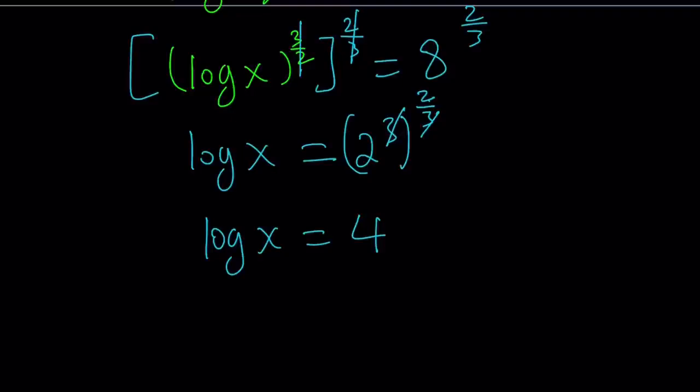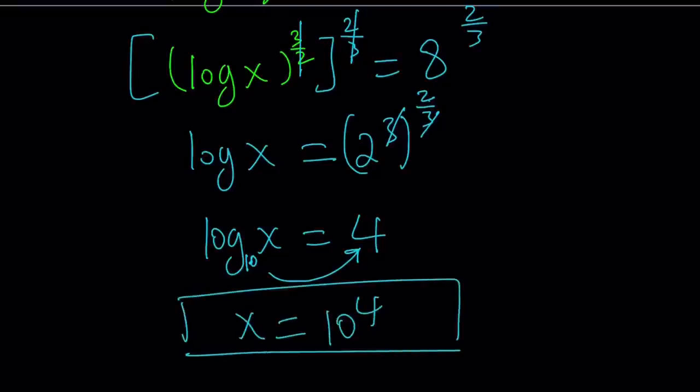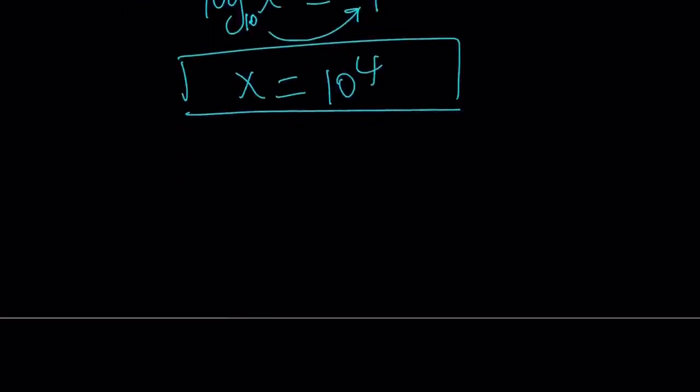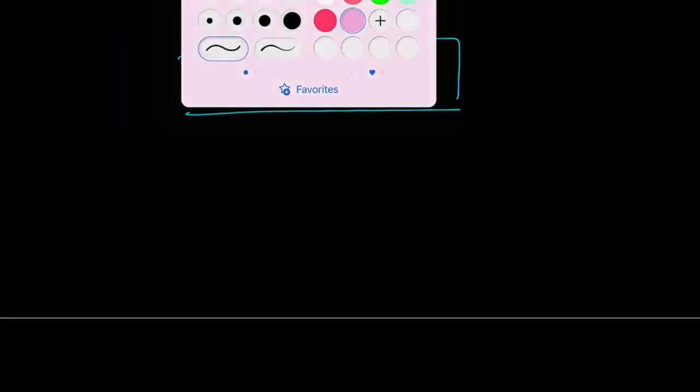What about x? By using the definition of logarithm, since the base is 10 and it's not written most of the time, we can use the definition which tells us x equals 10 to the fourth power. Awesome. So x can also be written as 10,000. And let's go ahead and talk about the second method.